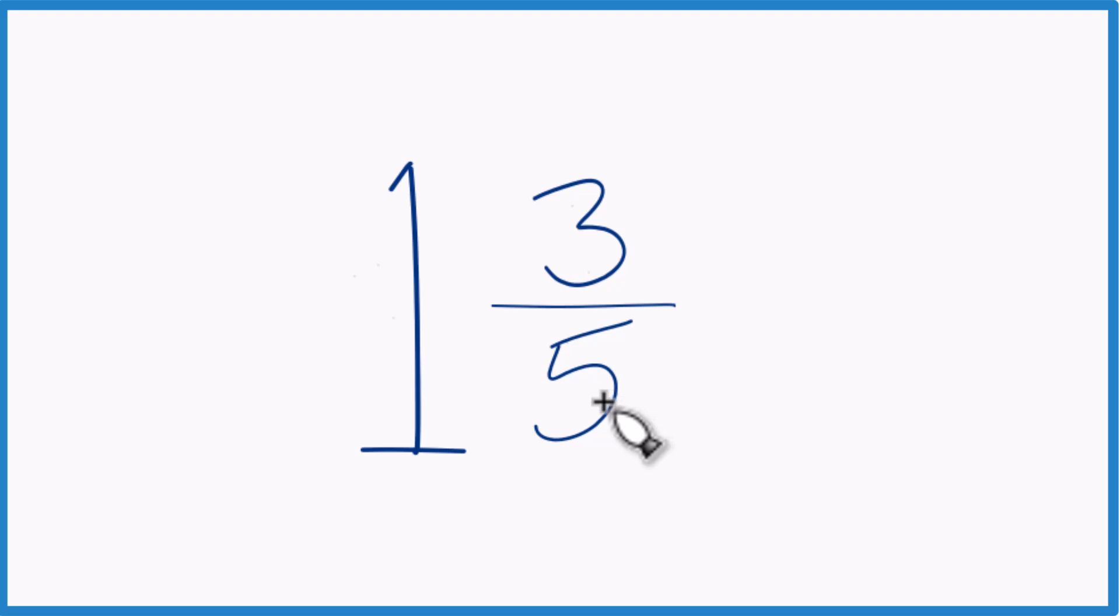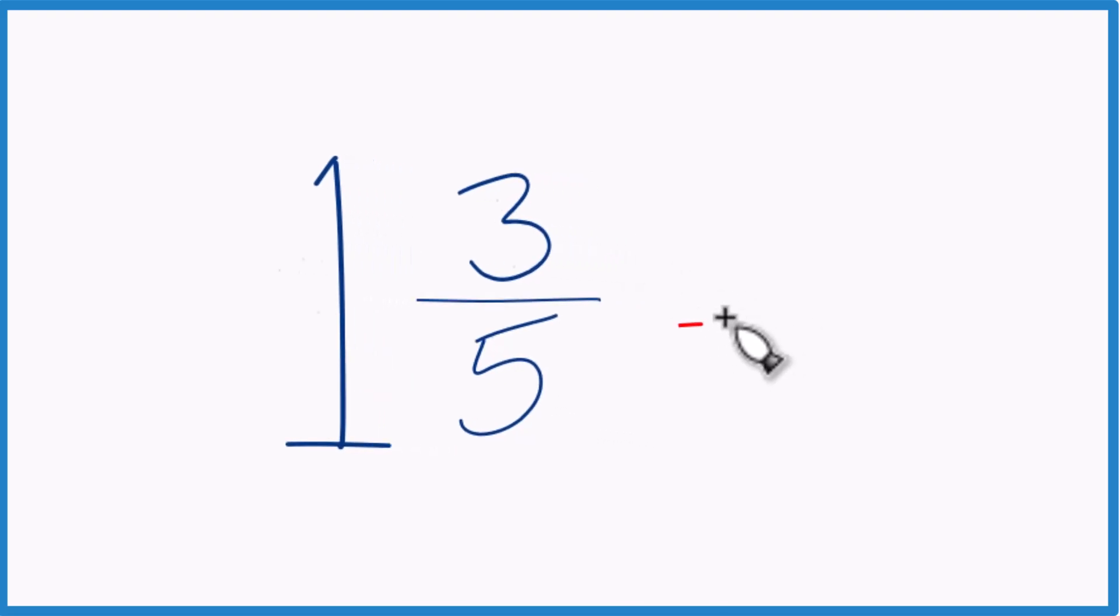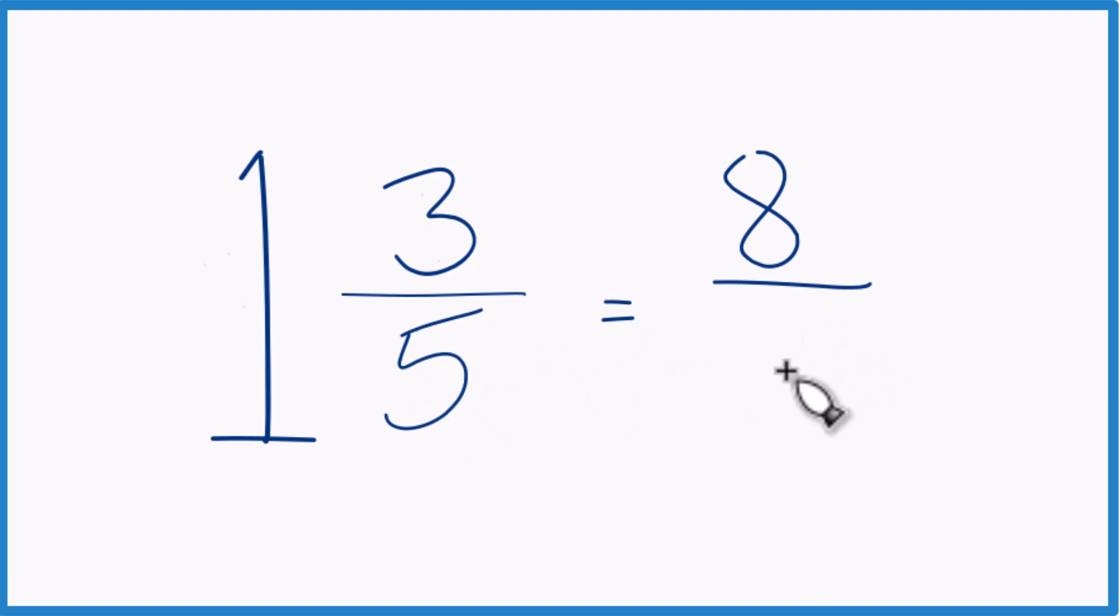1 times 5, that's 5. 5 plus 3 equals 8. That's your numerator. Just bring the 5 across for the denominator. You're done.